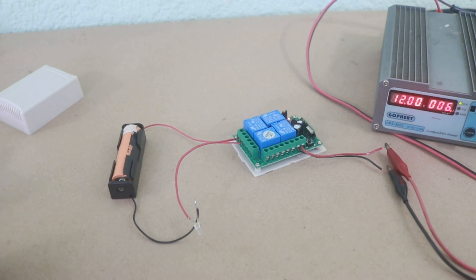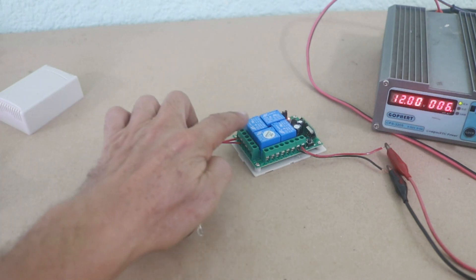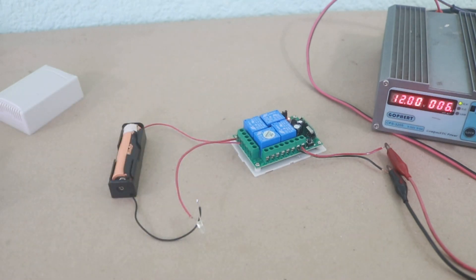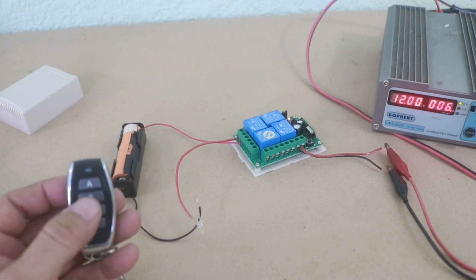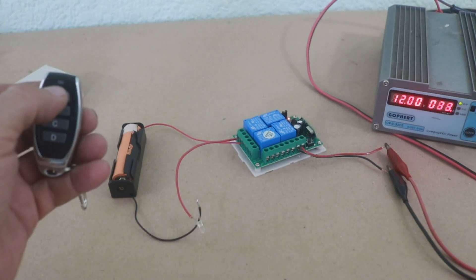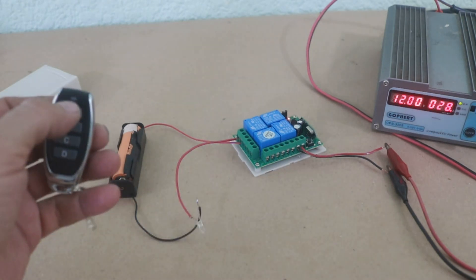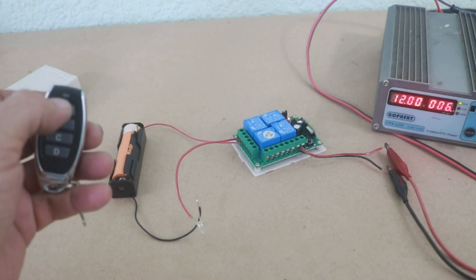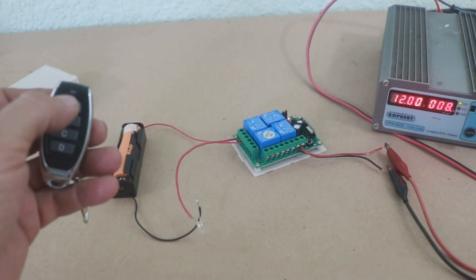And you need to make sure that the current draw of the load is less than 10 amps because that is the rating of the relays. So using channel 1, which is A, you can see that it works as expected. You can turn on and off your load.